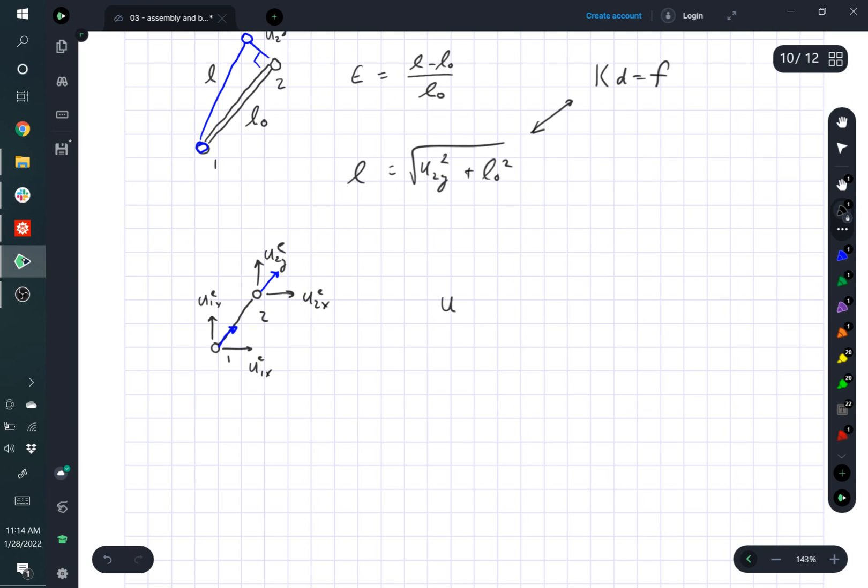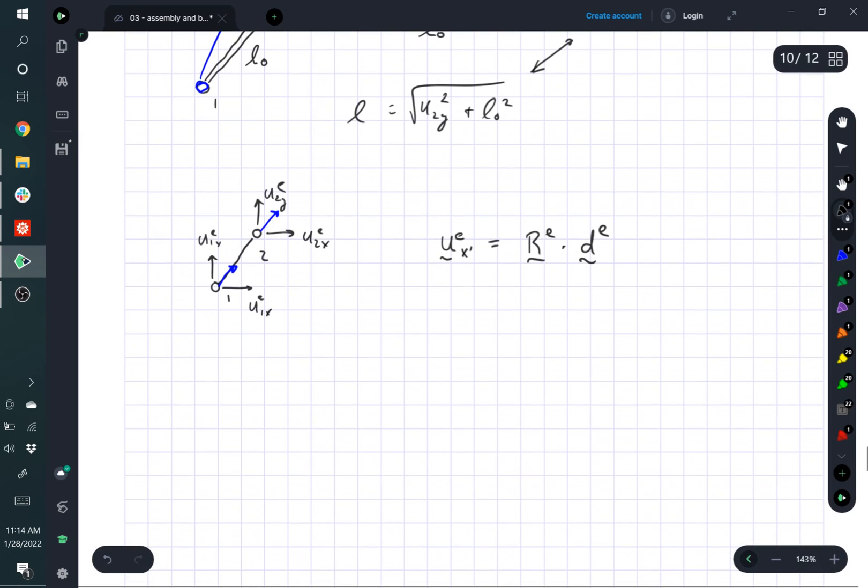so I'll say UEX prime, and this is going to be like a vector, is equal to the R matrix that we've already computed dotted with the degrees of freedom to the element. So again,